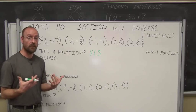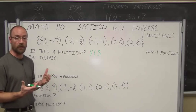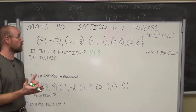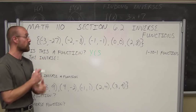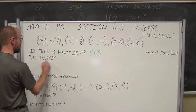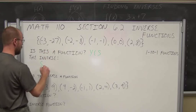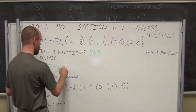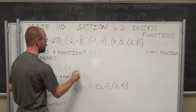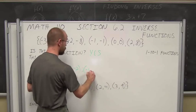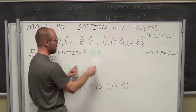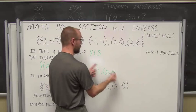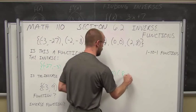When we talk about an inverse, an inverse of a function is essentially replacing all the x values with the y values and the y values with x values — we invert our values. So the inverse is going to be: negative 27, negative 3; negative 8, negative 2; negative 1, negative 1; 0, 0; and 8, 2. I just flip my x's and y's.